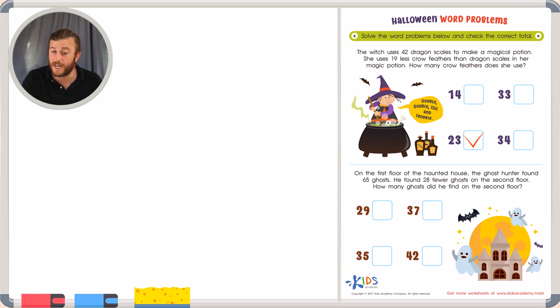Let's take a look at our second word problem. Again, underlining the important facts and details. On the first floor of a haunted house, the ghost hunter found 65 ghosts. He found 28 fewer ghosts on the second floor. How many ghosts did he find on the second floor?